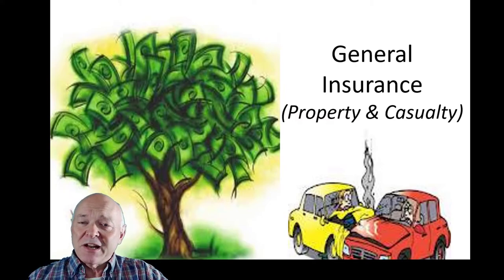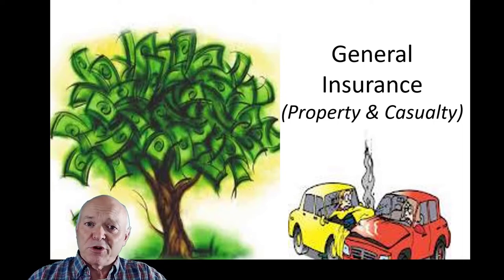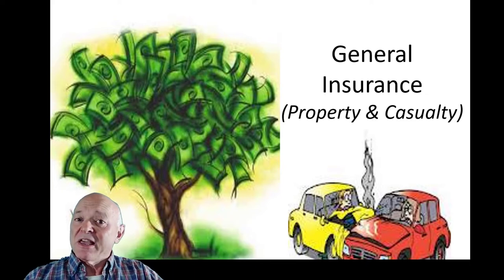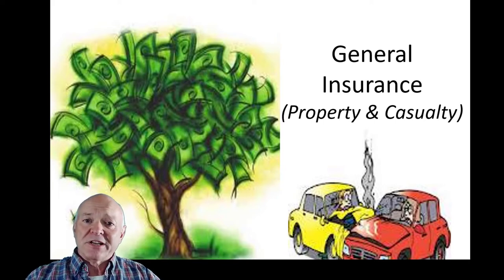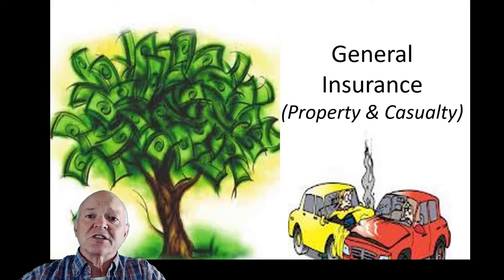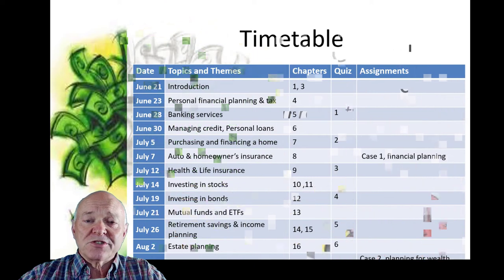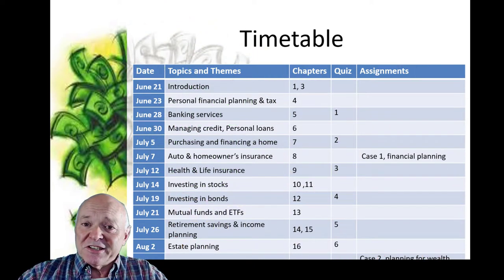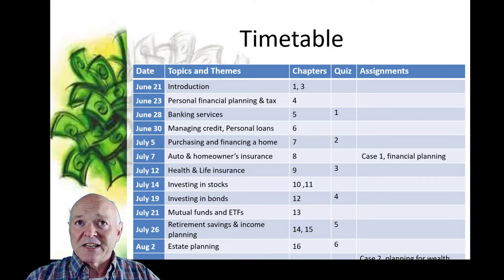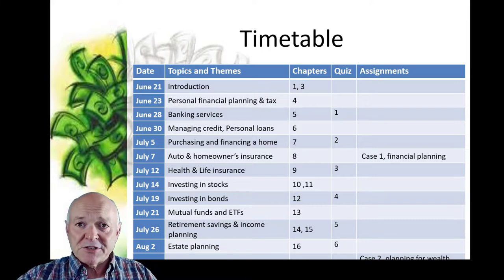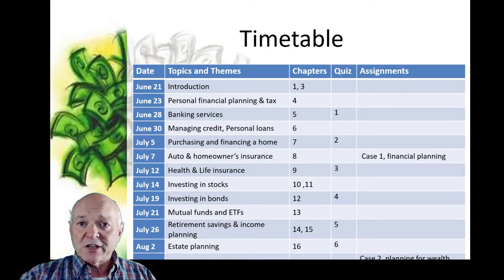Hi again and welcome back. Today we're going to look at a topic that most of us are going to be involved with many times over the course of our lives, and that's insurance — specifically general insurance: property and casualty, homeowners insurance, car insurance, liability insurance. Today's session, part of our personal finance course, covers material from Chapter 8 of the Madura and Gill textbook, hitting on the main topics. We'll also be looking at life insurance separately in a later session.